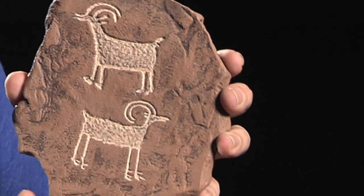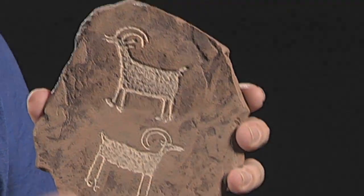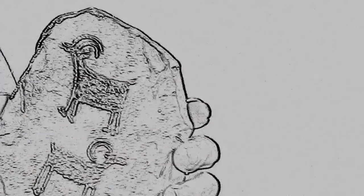This shows two big horn sheep. It's a copy of a petroglyph that exists in Southern Nevada. What I'm trying to do actually is locate these in both space and time to understand how ideas and cultures evolved over that time.